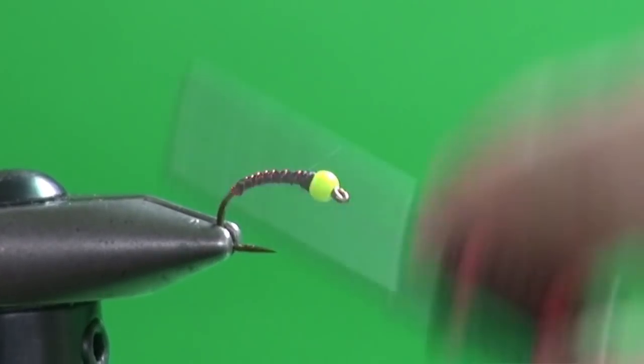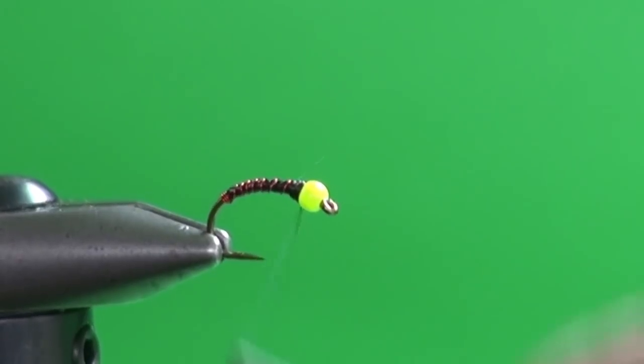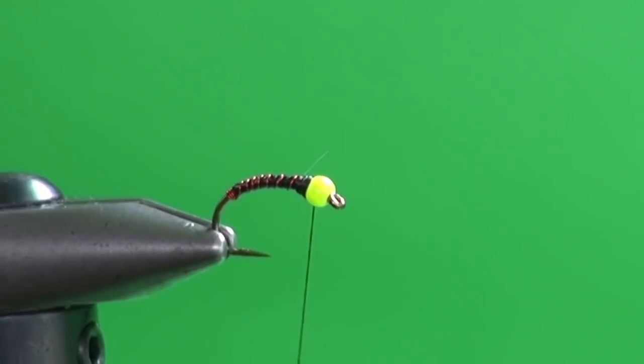So don't be in a hurry to make that ramp up to the bead. Go back and forth a few times. A nice, gentle slope on the ramp. If you go too fast, too soon, you'll end up with a steep ramp. And when you go to finish the fly, there's a good chance those thread wraps are just going to tumble. So I like the look of that.